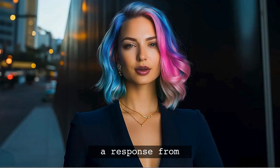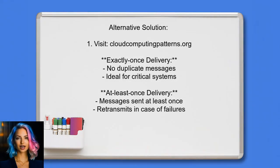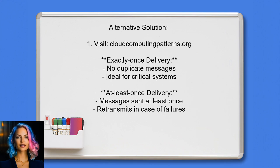A different user highlights the importance of understanding delivery guarantees in distributed systems. They recommend a resource discussing cloud computing patterns, which can provide more insights. For exactly once delivery, it ensures no duplicate messages are sent, making it ideal for critical systems. At least once delivery guarantees that messages are sent at least once, even if it means retransmitting them in case of failures.